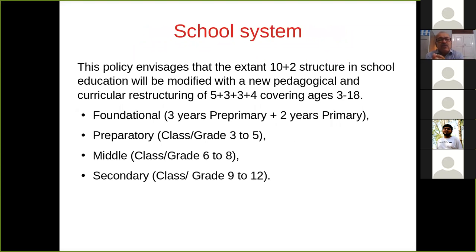How do they want to shape the school system? Presently we have a 10+2 structure of education. They wish to modify it into a 5+3+3+4 system. Presently it starts from age 6; they want to start from age 3, covering ages 3 to 18. First, the foundational stage — 3 years of pre-primary and 2 years of primary stage. Then the preparatory stage, class 3 to 5; middle stage, class 6 to 8; and the secondary stage, class 9 to 12.